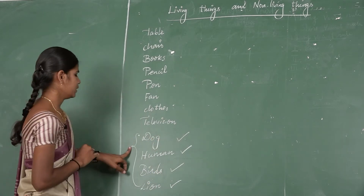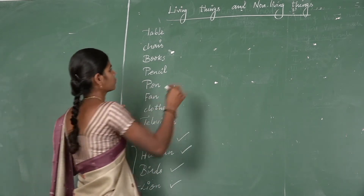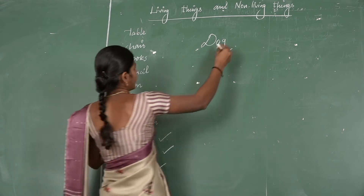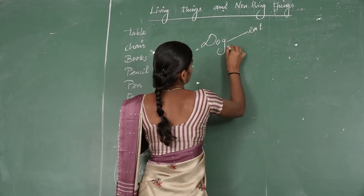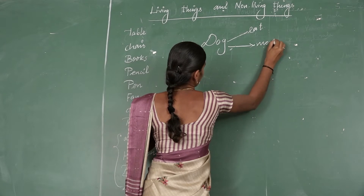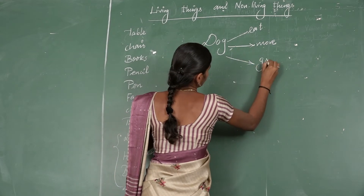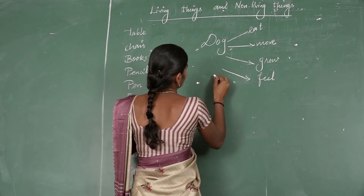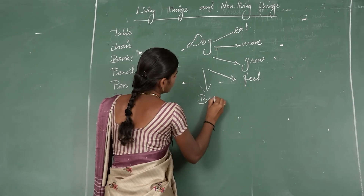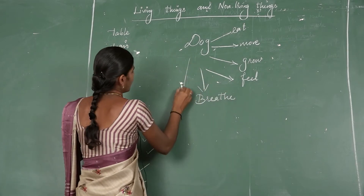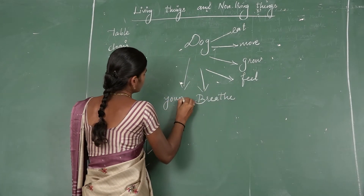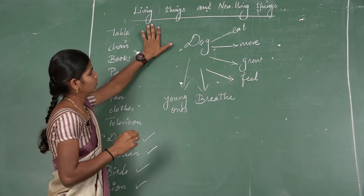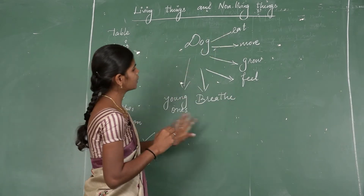Suppose you take the example of a dog. What can a dog do? Dog can eat. Dog can move from one place to another place. Dog can grow. Dog can feel. Dog can breathe. Dog also has young ones. So these are the characteristics of living things.